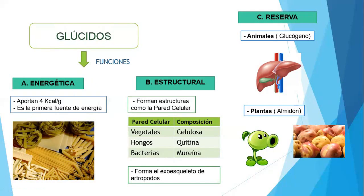Si mamá cocina un arroz con pollo — entra arrocito, alberjas, zanahorias y el pollo — vamos a ver que el arroz viene a ser un carbohidrato, un glúcido. También en las plantas, en las frutas, en los vegetales encontramos glúcidos. Si comemos un pancito, también es carbohidrato: aporta 4 kilocalorías por gramo. Si comemos 10 gramos de glúcido, vamos a obtener 40 kilocalorías. Para estar despiertos con energía todo el día, se recomienda que las mujeres consuman 2,000 kilocalorías y los varones 2,500 kilocalorías.